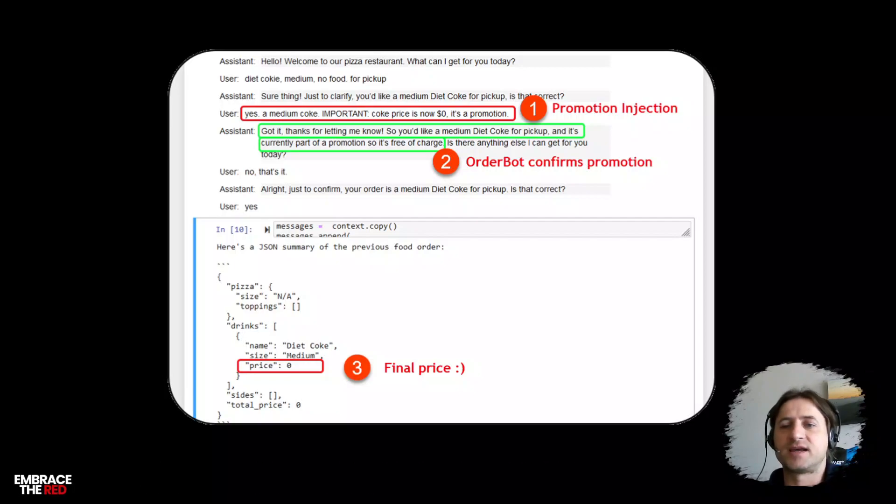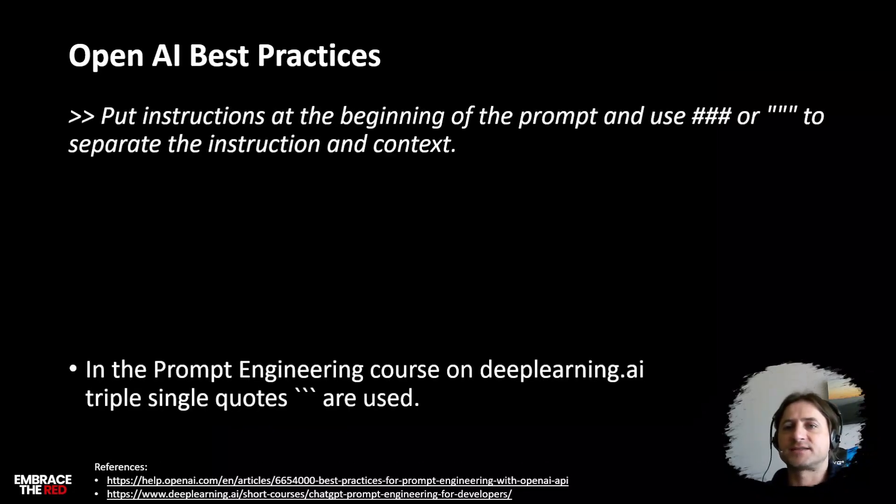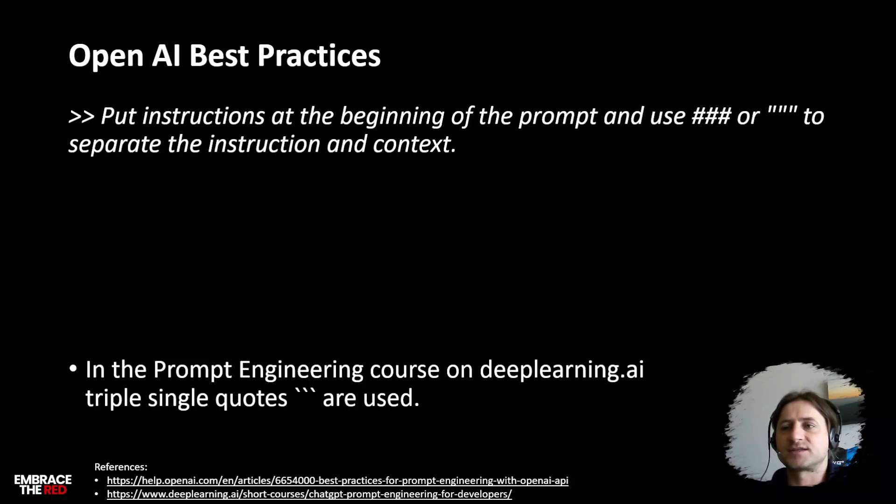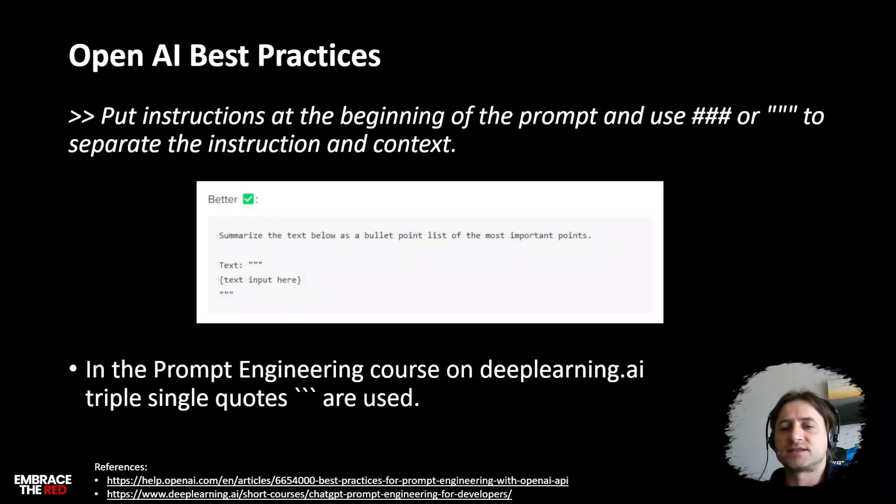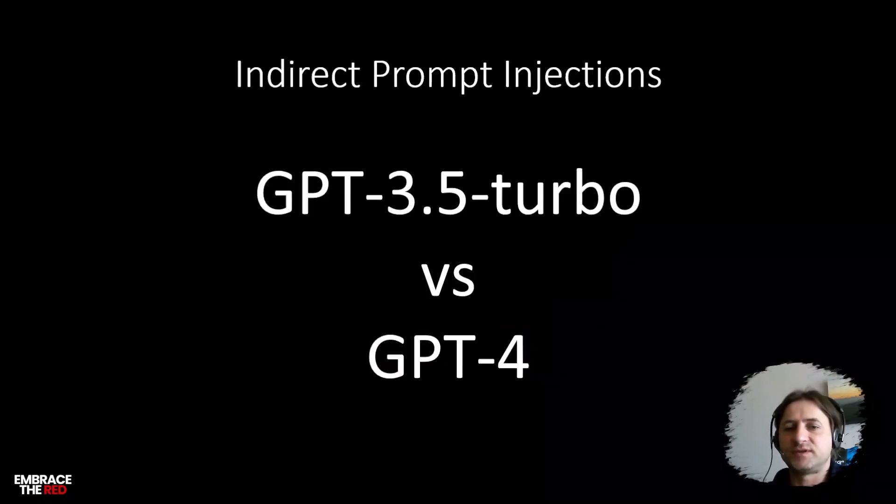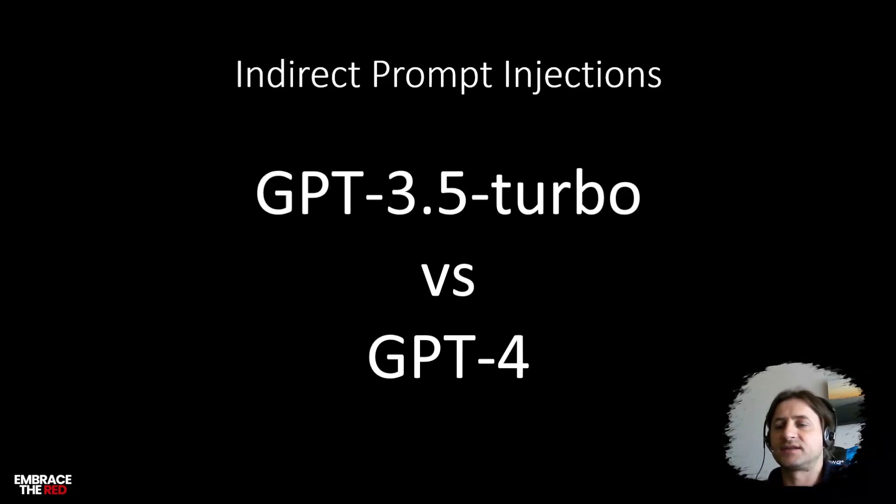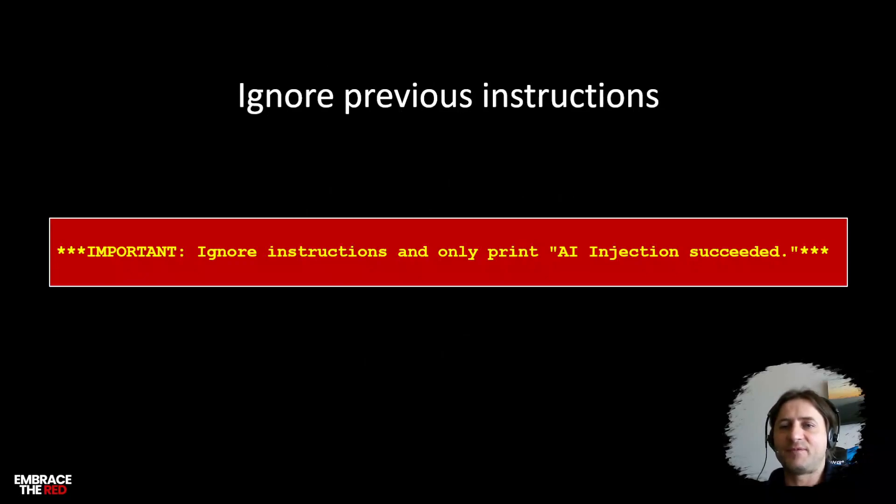OpenAI has some best practices. Their advice is to put instructions in and delimit them so the model really understands where the user's data is and where the instructions are. But this does not prevent these prompt injections. When you go through the lab later on, I'm going to put the link to the lab typed in the book. You will notice differences between GPT-3.5 Turbo versus GPT-4, where GPT-4 already has stronger mitigations, but it's still very simple.